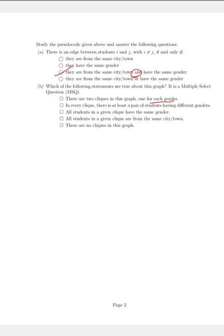Option 3 states that all students in a given clique have the same gender. This is correct because for a clique to be formed, all members must have the same gender and same city or town. Option 4 states that all students in a given clique are from the same city or town — this is also correct. Option 5 states there are no cliques in this graph, which is wrong because we have just proven that there is a clique. So options 3 and 4 are correct for the second part, and option 3 is the correct answer for the first part.